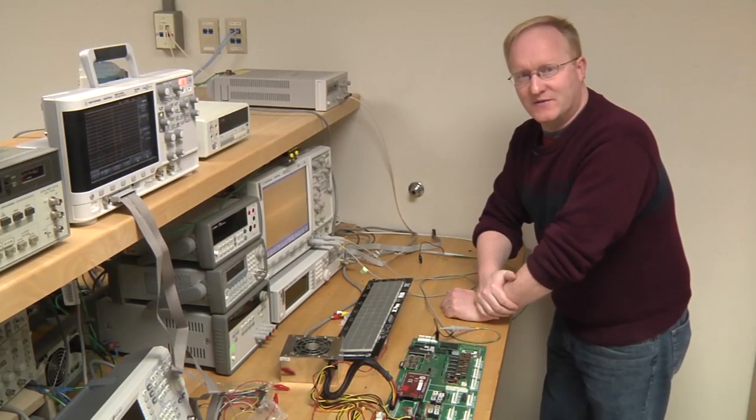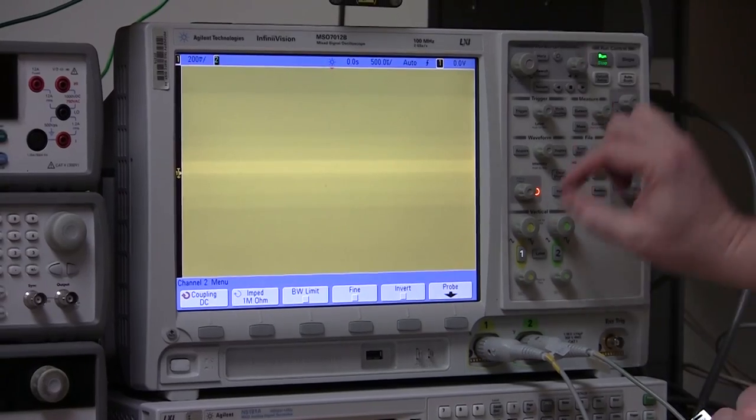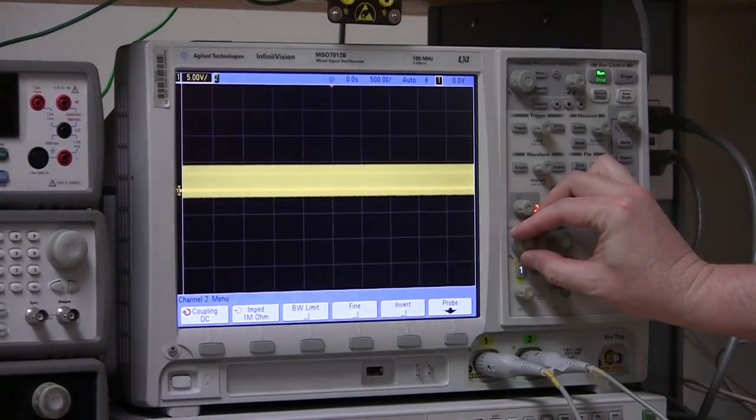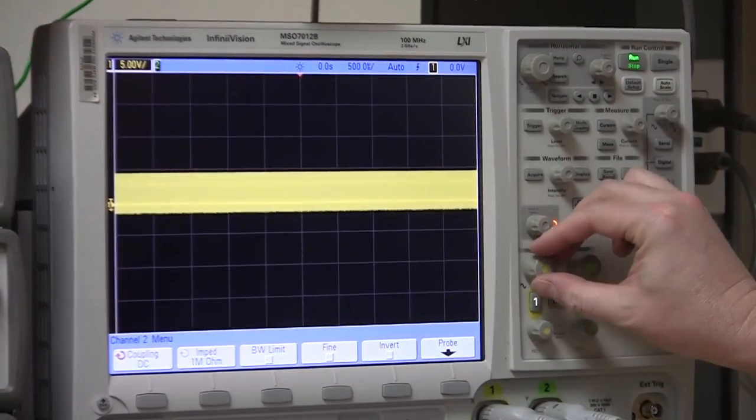This may look like a screen full of nonsense, but our signal is actually in there someplace. So the vertical control basically scales how much you see of it in the screen there.